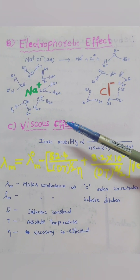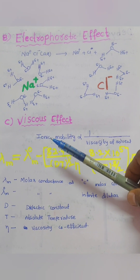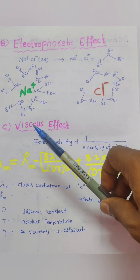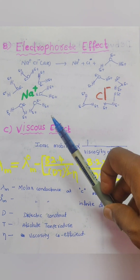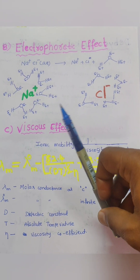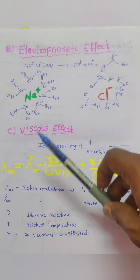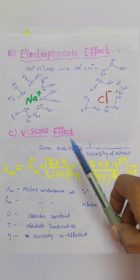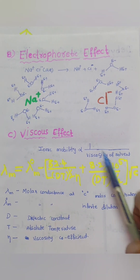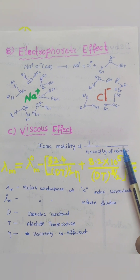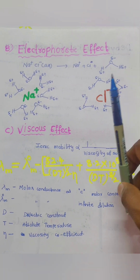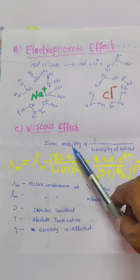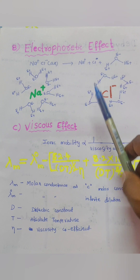Now we consider the third effect, the viscous effect. Viscosity means the thickness of a liquid. For example, sulfuric acid (H₂SO₄) and oils are more viscous than water. In a viscous liquid, ionic mobility is very low. There is an inverse relation between ionic mobility and the viscosity of the solvent. As viscosity decreases, the molar conductivity of the ions increases.